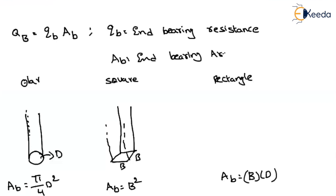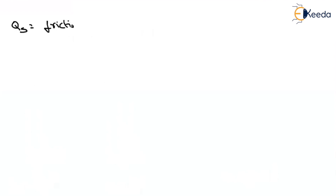The end bearing area depends upon the pile dimensions, and the end bearing resistance depends upon the type of soil. So depending on the pile, you find the end bearing area; depending upon the soil, you find the end bearing resistance. For the frictional capacity, QS equals skin resistance Qs multiplied by the surface area As.